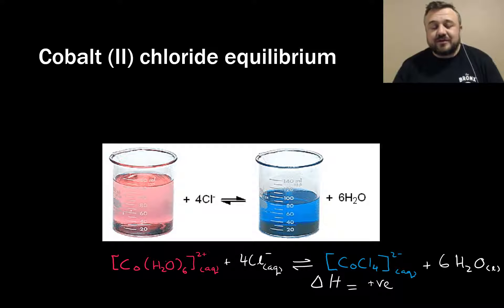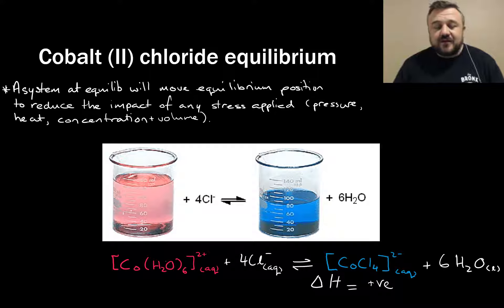So going from cobalt hydrate plus four chlorides to cobalt chloride, we call that the forward reaction, and the reverse reaction is going from cobalt chloride plus six waters to cobalt hydrate ion plus four chlorides. So a system in equilibrium will move the equilibrium position to reduce the impact of any stress applied, pressure, heat, concentration, and volume.